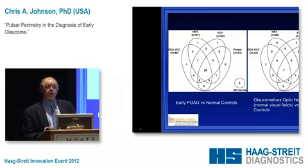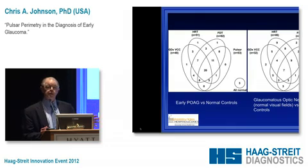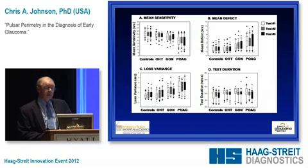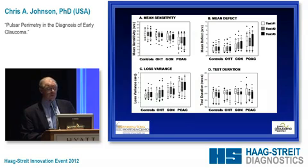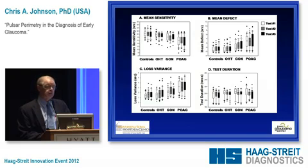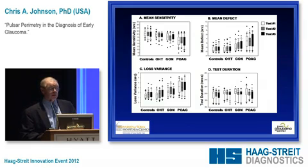One advantage is that the motion component gives patients a better idea of when they can see the stimulus. We also looked at test-retest variability and the effects of test duration. There is really not much of a learning or practice effect with Pulsar Perimetry. Test duration does not vary too much across groups—controls, ocular hypertensives, glaucomatous optic neuropathy, and primary open-angle glaucoma—though sensitivity is worse overall for glaucoma groups and variability increases a bit.